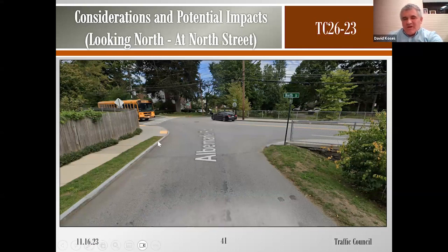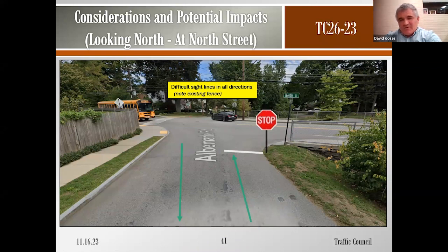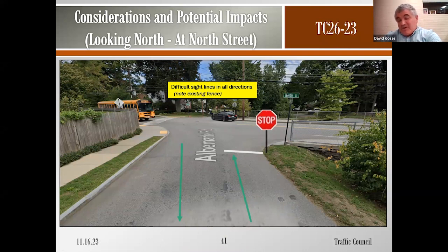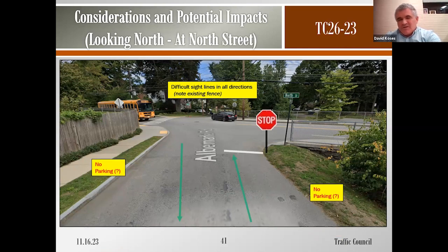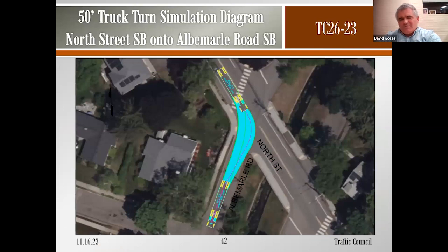At the North Street end, looking north, the trial would introduce two-way traffic and a stop sign where currently it is one-way. Sight lines at Albemarle and North Street are very poor — there is a fence — and it does not appear safe to allow vehicles to proceed straight, turn left, or even turn right at this location. Additionally, truck turn simulations show that a truck turning southbound would conflict with northbound vehicles on the now two-way street.